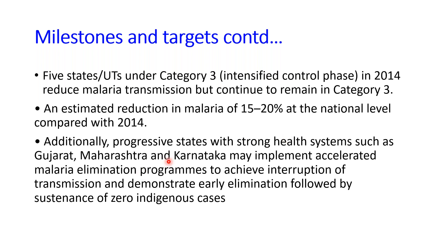Progressive states with strong health systems, such as Gujarat, Maharashtra, and Karnataka, may implement accelerated malaria elimination programs to achieve interruption of transmission and early elimination followed by zero disease cases, as these states were already performing well in controlling malaria cases.